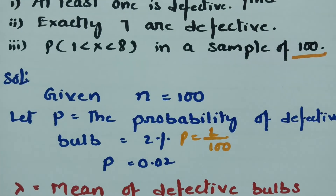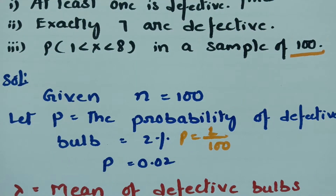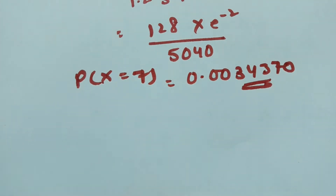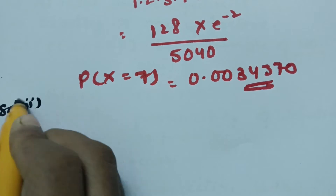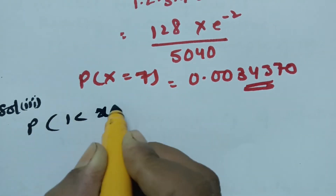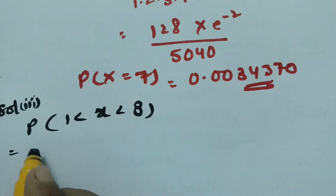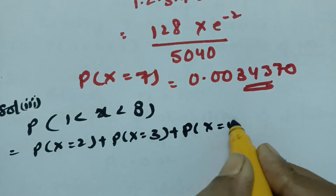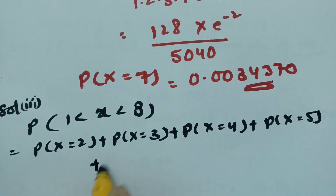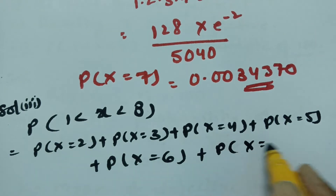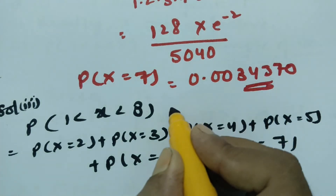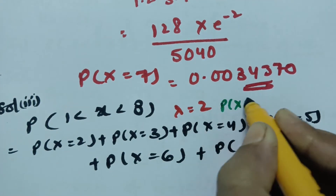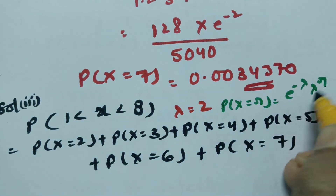The next solution is to find the probability of 1 less than x less than 8 out of 100 bulbs. The values between 1 and 8 are: probability of x=2, plus probability of x=3, plus probability of x=4, plus probability of x=5, plus probability of x=6, plus probability of x=7. Lambda value is 2, and using the Poisson distribution formula: P(X=r) = e power minus lambda, lambda power r by r factorial.